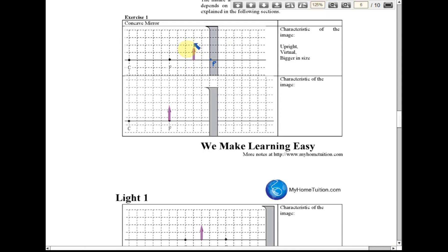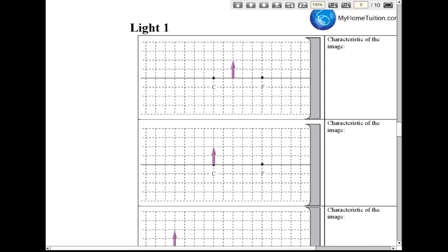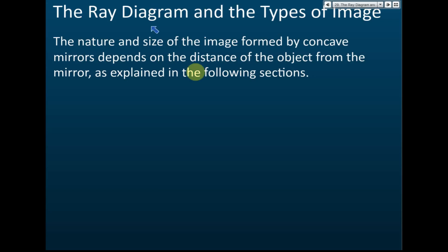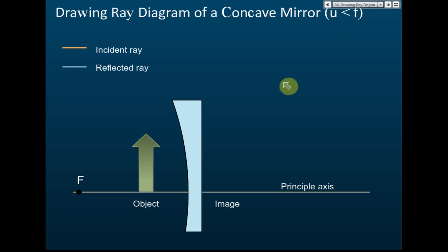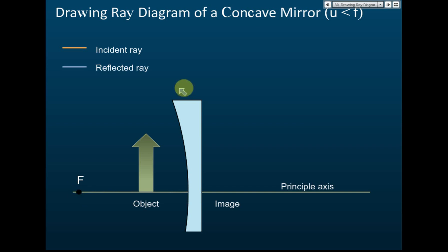I'm going to show you the ray diagram and you can draw along. Let's look at case number one. We have a concave mirror and the object is placed in between the pole and the principal focus. We use blue lines to represent the reflected ray and orange lines to indicate the incident ray. In this case, u is less than f.